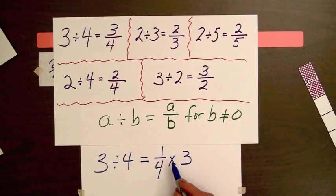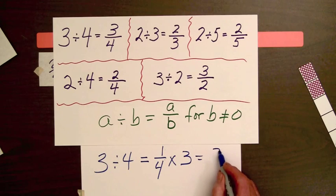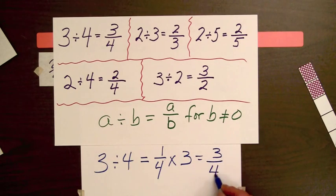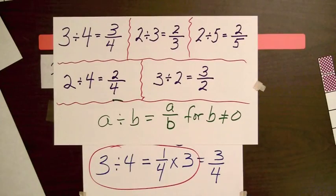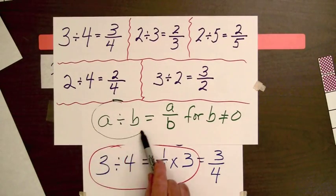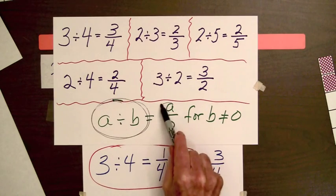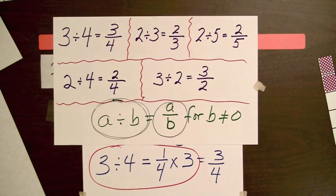And we know from fractions, multiplying fractions times whole numbers that we multiply the whole number times the numerator there, so this is just three-fourths. So here's another way to come out with the result. Dividing two whole numbers, we get the fraction whose numerator and denominator are the two whole numbers. This relationship of dividing one whole number by another and obtaining a fraction is very convenient.